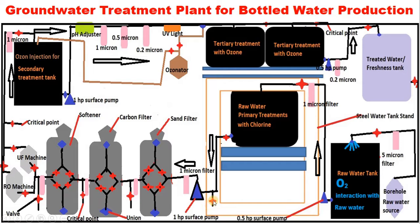At this sampling point, total dissolved solids (TDS) is measured, total organic carbon (TOC) is measured, biochemical oxygen demand (BOD) is measured, pH is measured, alkalinity is measured, and oxidation-reduction potential (ORP) is measured. If everything is in order, this valve is closed and the water is allowed to flow with the help of a 1 horsepower surface pump.